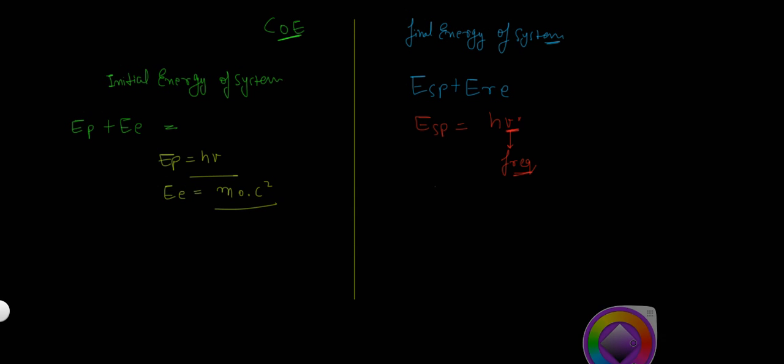And the energy of recoiled electron is given by—now, this is important—the root of p squared c squared plus m0 c squared to the power of 2. Now, p here is the momentum, momentum of recoiled electron.